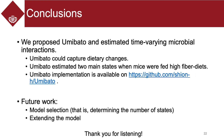Here are the conclusions. In this study, we proposed Umibato and estimated time-varying microbial interactions. As a result, Umibato could capture dietary changes, and Umibato estimated two main states when mice were fed high-fiber diets. There are some future works. The first one is model selection — that is, determining the number of states. The second one is extending the model; for example, we can consider the error of QMPs by extending the CTR-HMM. Thank you for listening.